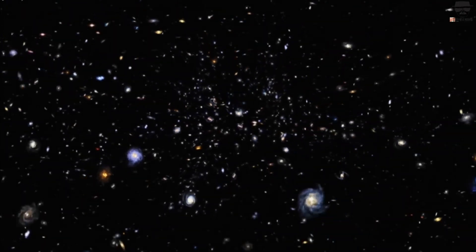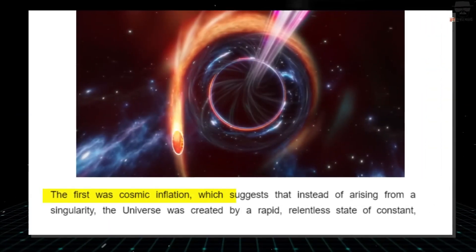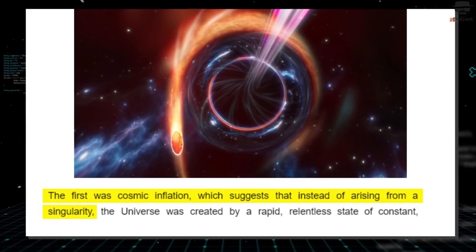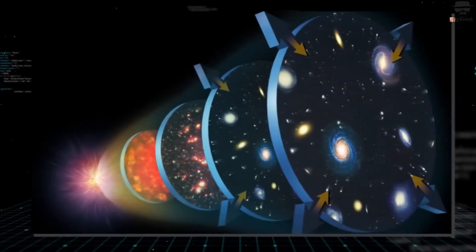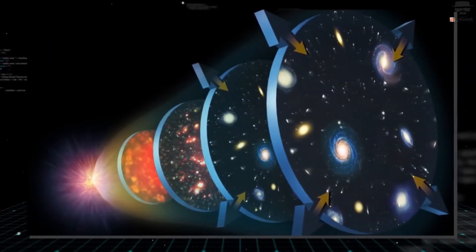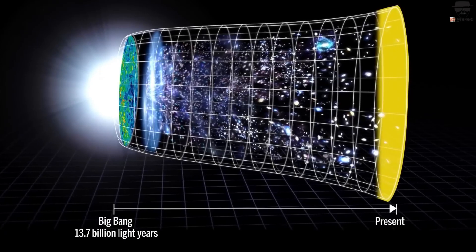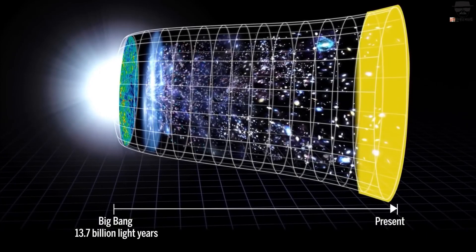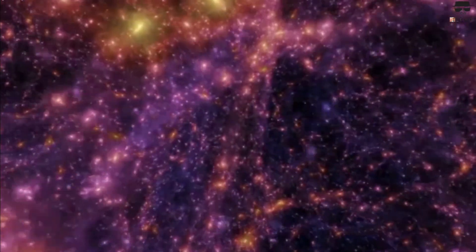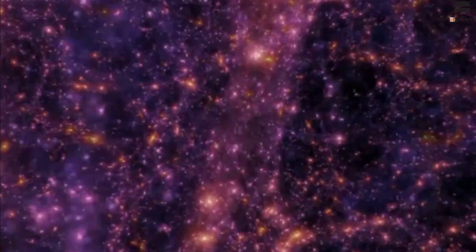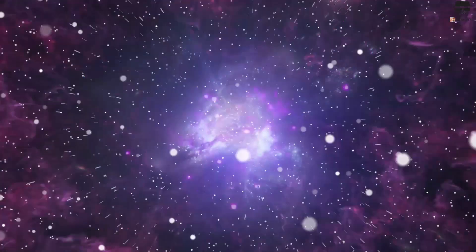The first was cosmic inflation. Instead of arising from a singularity, it now appears that the universe was set up by a rapid, relentless state of constant, exponential expansion that preceded the hot Big Bang. It's as though there were some sort of field that provided an energy inherent to space itself, causing the universe to inflate, and only when inflation ended did the hot Big Bang begin.